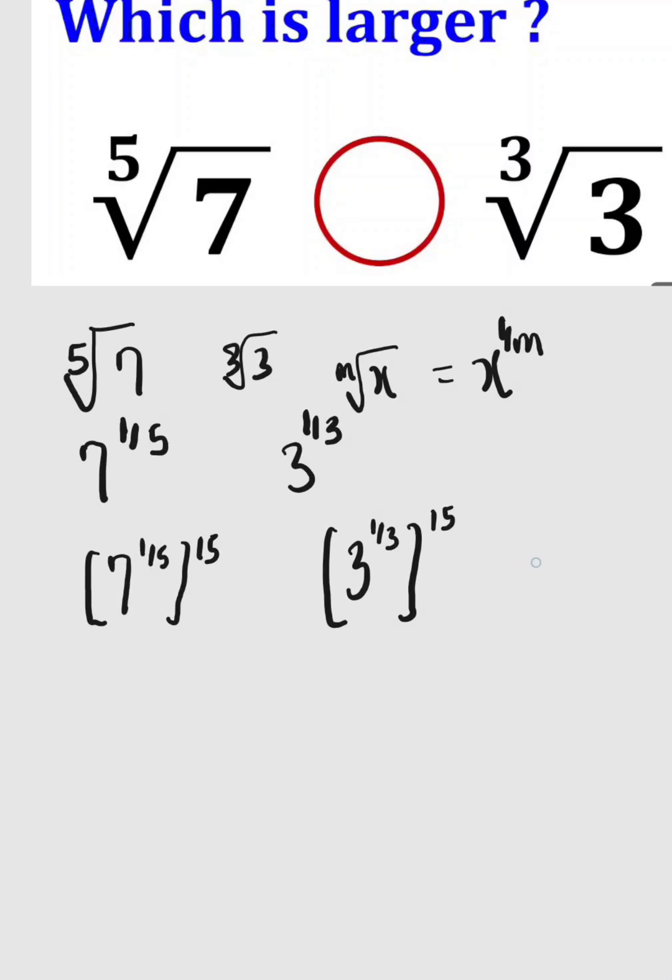Recall the rule of indices that says when you have (a to the power of m) to the power of n, this is the same as a to the power of m times n. So here we have 7 to the power of 1/5 times 15, and 3 to the power of 1/3 times 15.